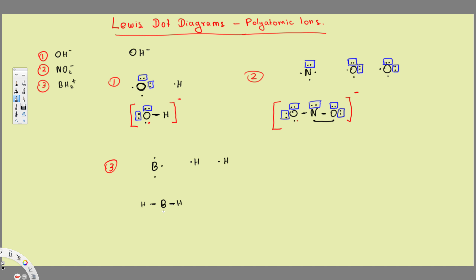Since we have one extra electron, we remove it. If we remove one electron, the whole thing becomes plus. Just like gaining an electron makes it minus, removing one makes it plus. That's how we draw these Lewis dot diagrams. I hope you guys liked this video — see you next time!